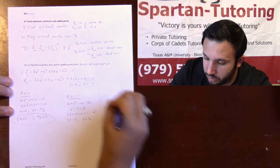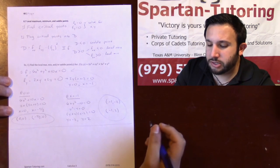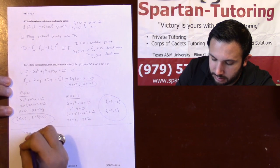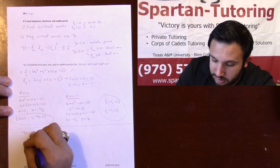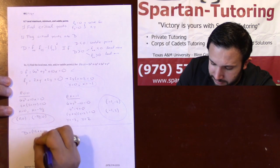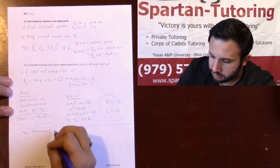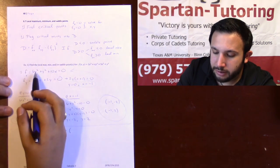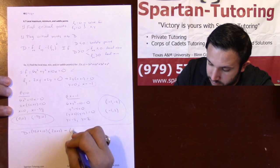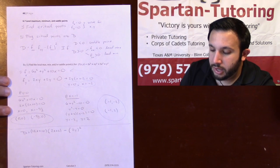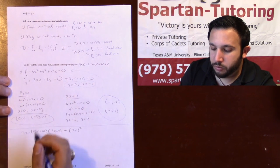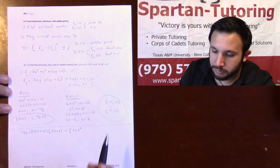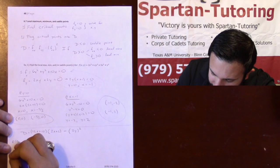Now that we have our four critical points, we need to plug all of them into D. Here D equals fxx times fyy minus fxy squared. fxx equals 12x plus 10, fyy equals 2x plus 2, and fxy equals 2y, so fxy squared equals 4y squared. Now we plug each critical point in to determine saddle point, max, or min.